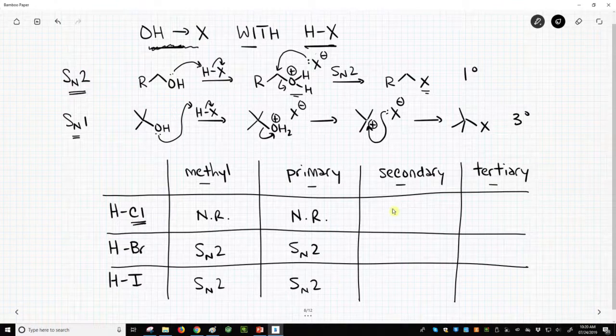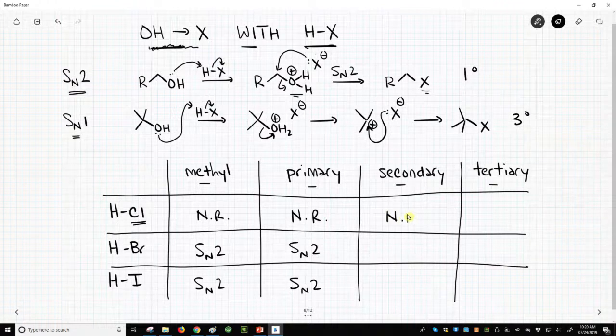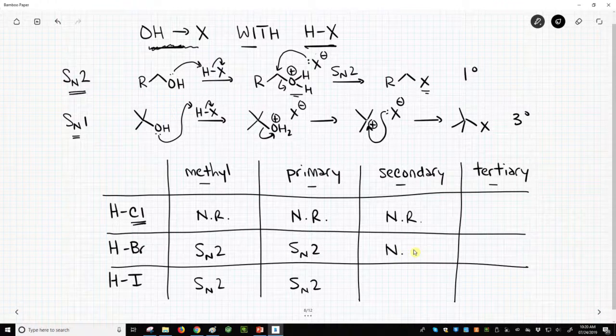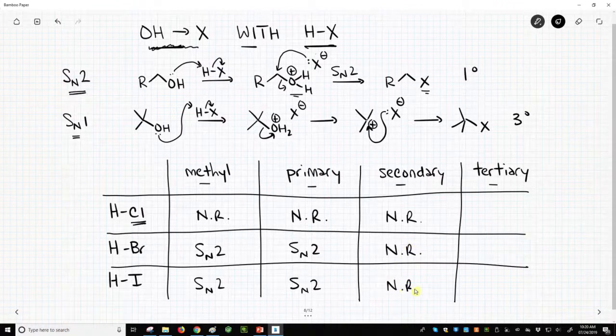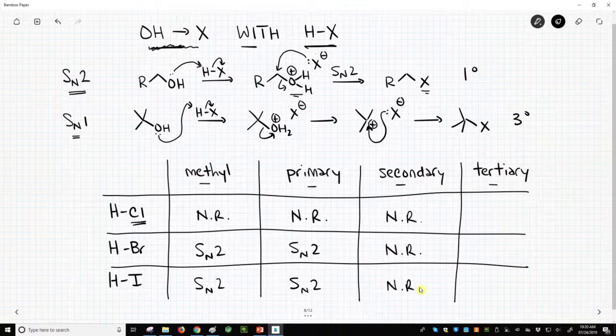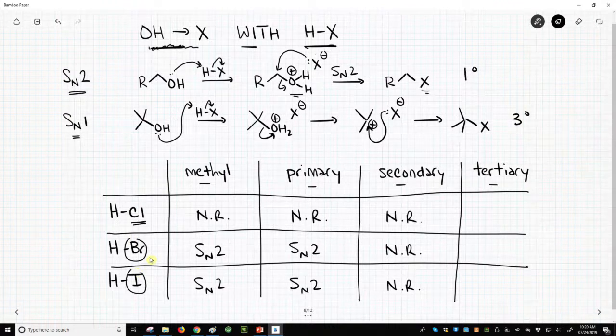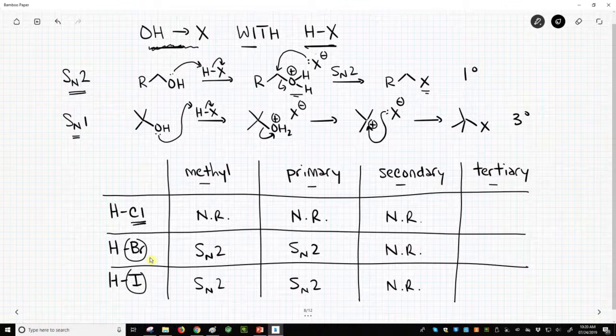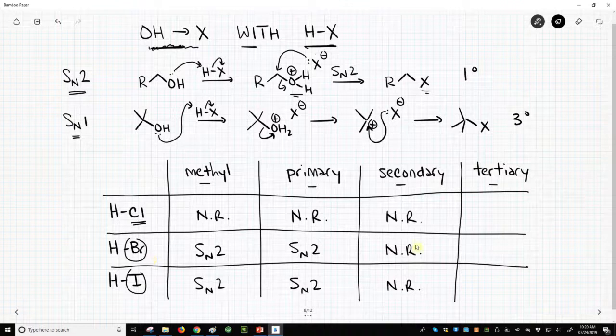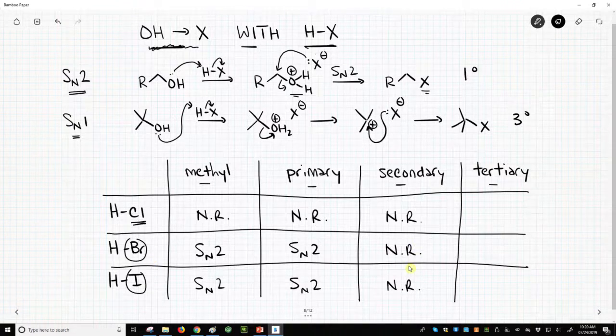Secondary halides. Well, it turns out HCl still doesn't work, and I'm going to say that HBr and HI also do not work. Secondary halides... I'm sorry, secondary alcohols. They're too hindered for our good, not great nucleophiles, bromide and iodide, and they're secondary carbocations. You can make them, but they're just not that good. So this is not a reliable method to count on either SN1 or SN2 for secondary alcohol.